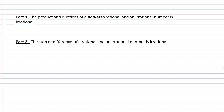In class 9 you must have studied these two facts. The first fact is: the product and quotient of a nonzero rational and an irrational number is irrational. We stress on 'nonzero rational' because anything multiplied by 0 is 0, and 0 is a rational number. The second fact states that the sum or difference of a rational and an irrational number is irrational.